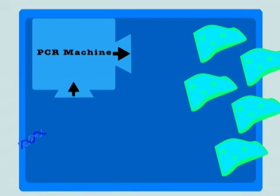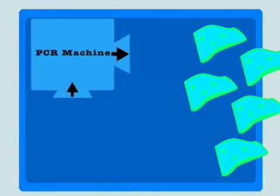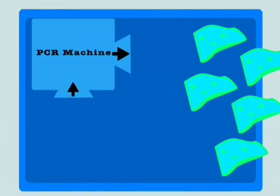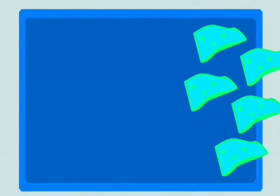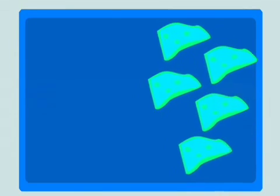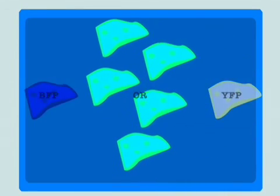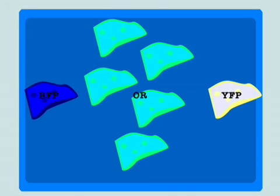Now we will actually be performing the mutation of the DNA using PCR, or polymerase chain reaction, to create millions of copies of the plasmid that will then be put into the bacterial host cells to create our BFP or YFP, depending on your choice.